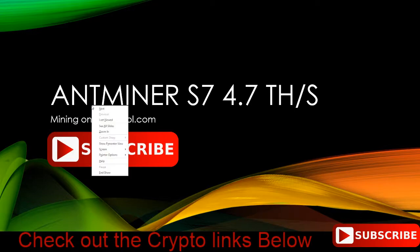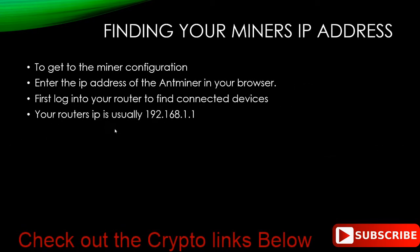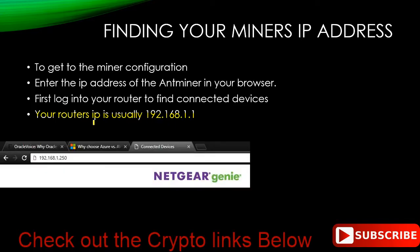We'll get started. The first thing we're going to need to do is figure out what your Antminer's IP address is, and that's basically pretty easy if you know how to get to your wireless router's information. Your router's IP is usually 192.168.1.1. If you type that into your browser, it will take you into your router's login screen. You'll have to enter your username and password and it will give you the information you're going to need.